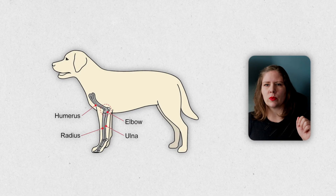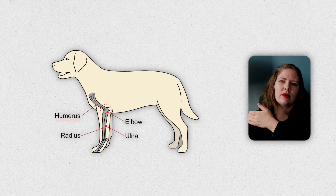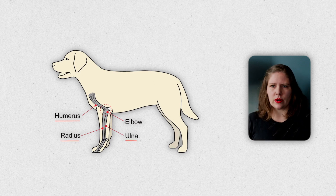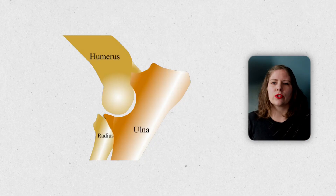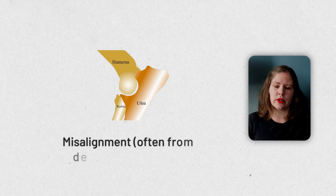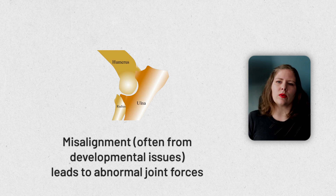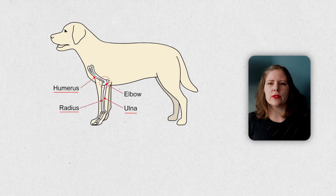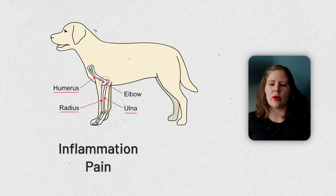In order to explain what elbow dysplasia is, it's important to first know that the elbow joint is actually composed of three separate bones. This is the humerus, which is in the upper part of the arm, and then the radius and the ulna in the lower part of the arm. When the elbow joint is normal or healthy, all three bones work together perfectly to smoothly go through a normal range of motion. If any part of the interaction between these three bones is not perfectly in alignment — this usually happens because of abnormalities during development — then we get elbow dysplasia. This happens because there will be abnormal forces put on specific parts of those three bones, which causes inflammation, pain, and this compilation of issues that we call elbow dysplasia.